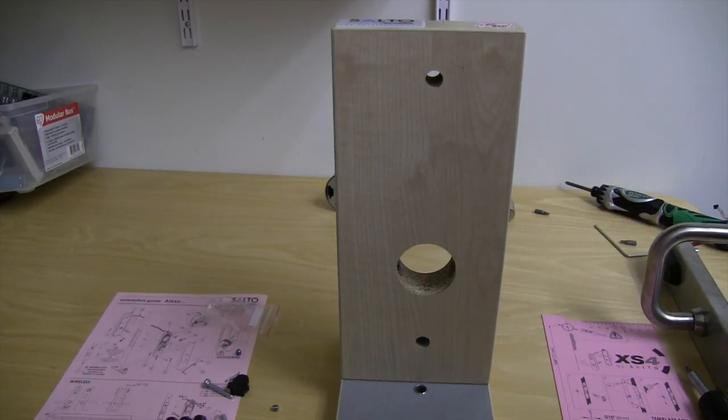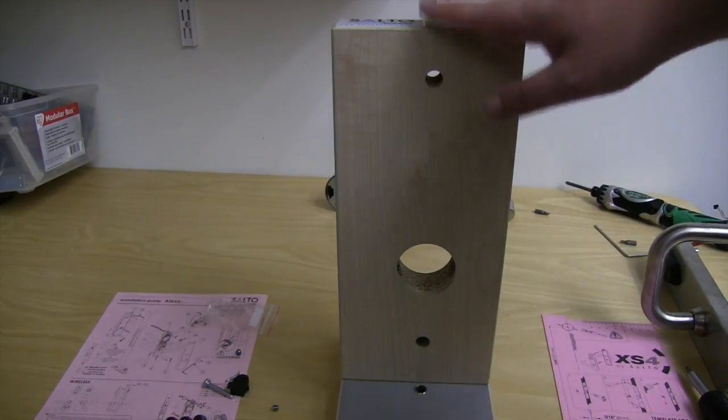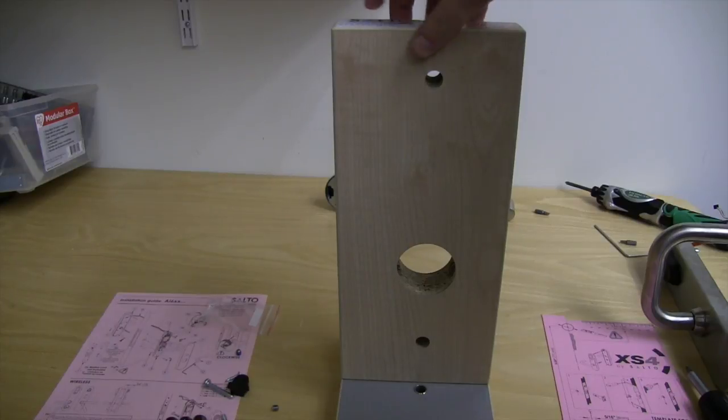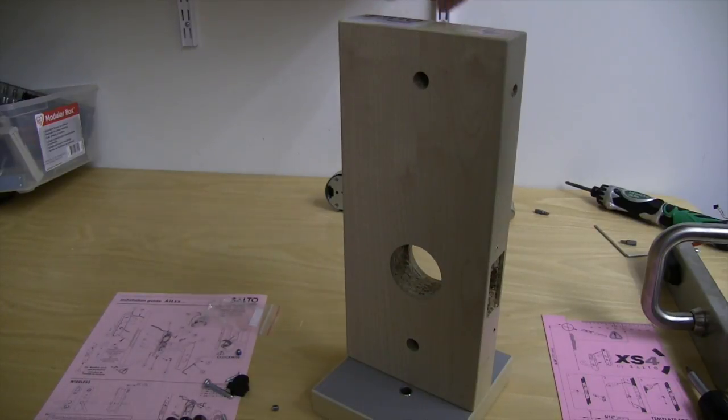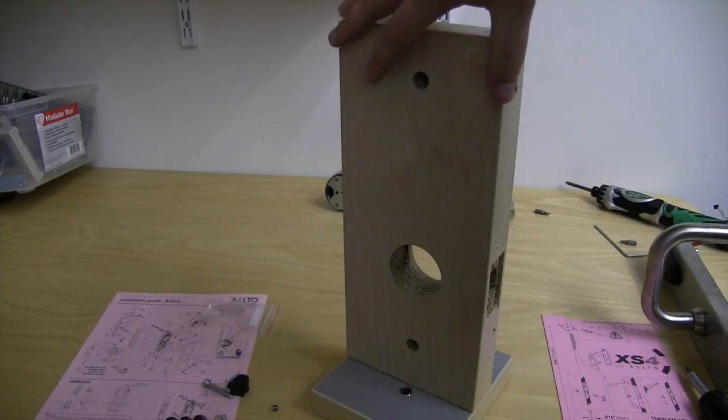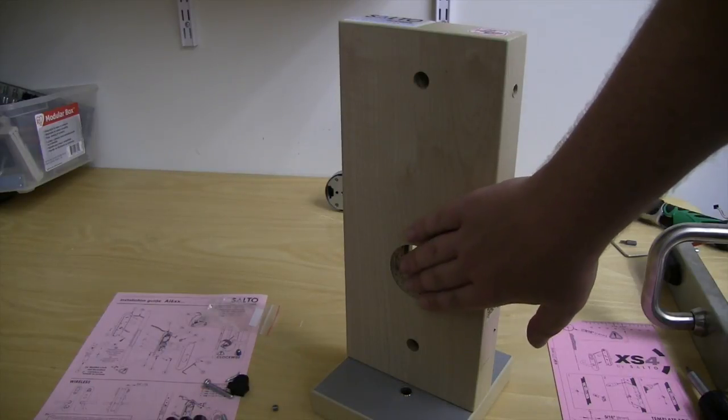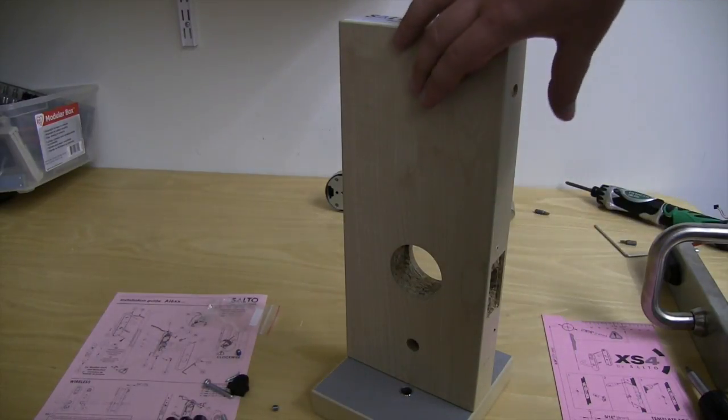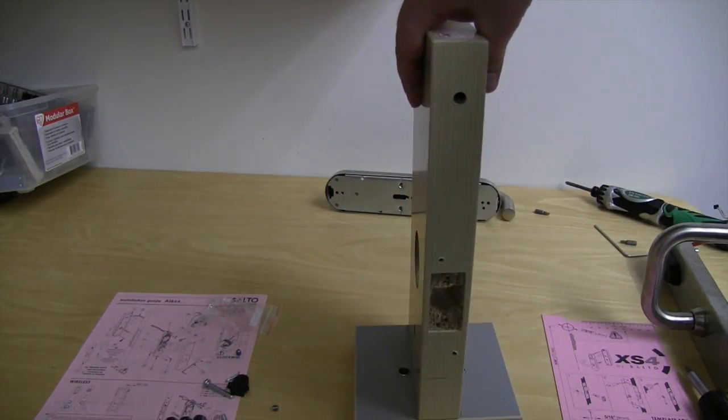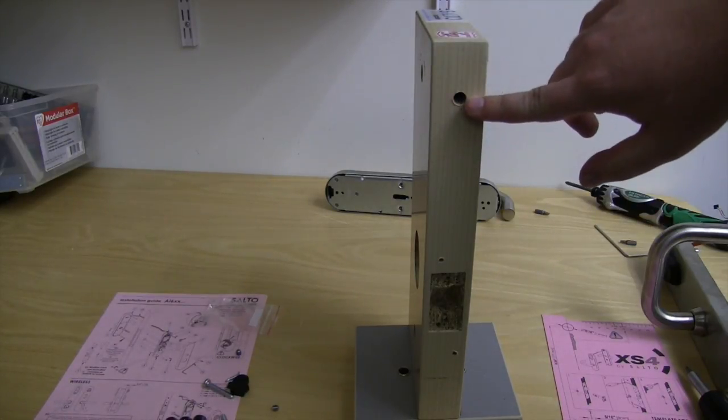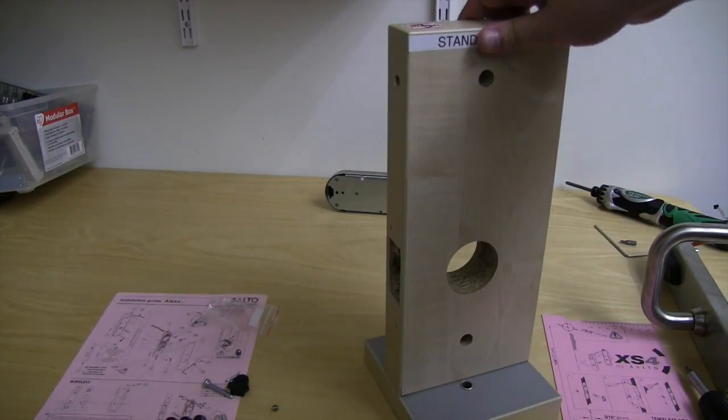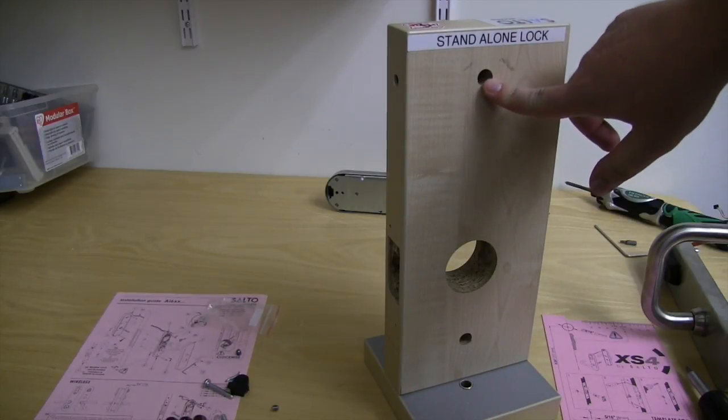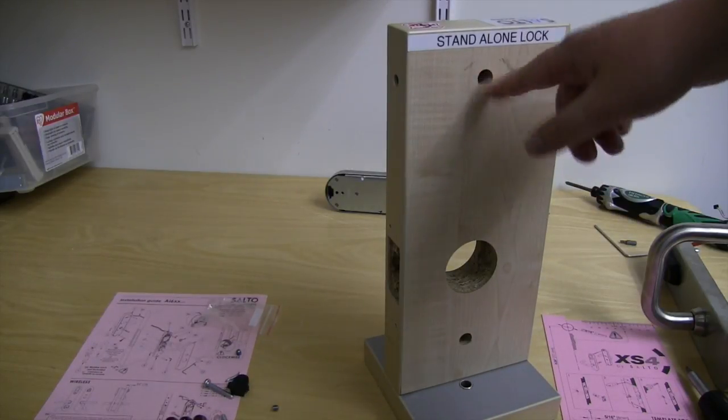For the use of this video, I'm going to use this Salto template block to show you how to install the lock, but obviously you'll be using a true door. Aside from the main cylinder hole and the two smaller holes on the side, you're going to need to drill a small hole for the door sensor through to meet up with the top Salto hole.